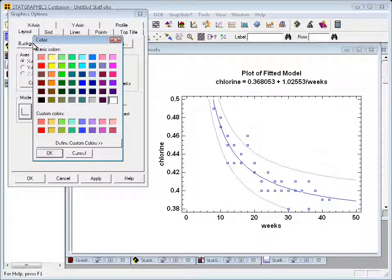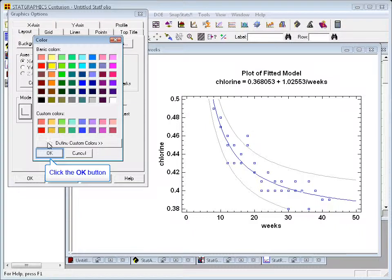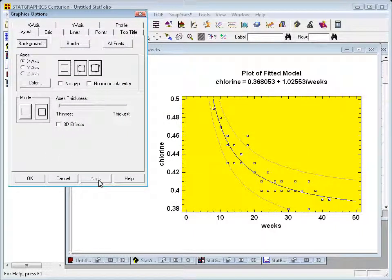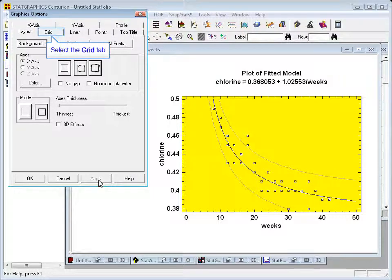which will bring up a box with various colors. If I click on the yellow box, then press OK, then press apply, you'll see that it adds a yellow background to my graph.